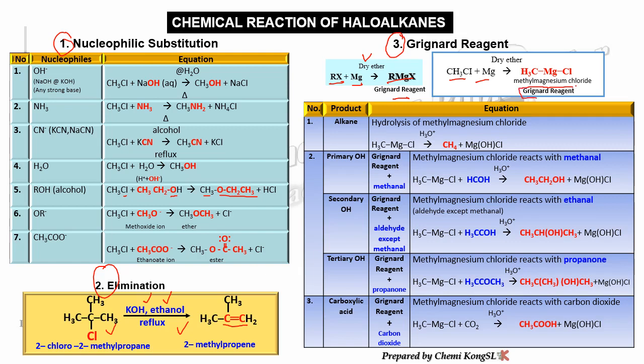In the Grignard reagent, R can be any alkyl group attached to halogen, including cyclic compounds. Based on the Grignard reagent, it can form alkane, primary alcohol, secondary alcohol, tertiary alcohol, and carboxylic acid — depending on the reagent used.